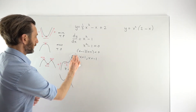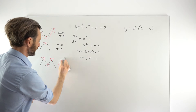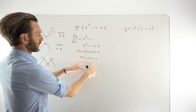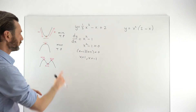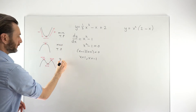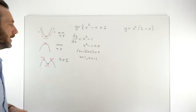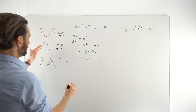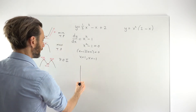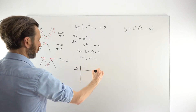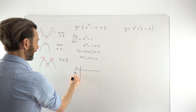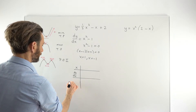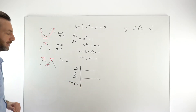We now know this cubic function has two stationary points, but we don't know what type they are. To determine the nature, we're going to construct a table called a nature table, which is effectively a mini sketch of the graph. We put x in the first row, dy/dx in the second row, and the shape of the graph in the third row.